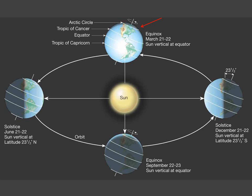Three months later, as the Earth continues its counter-clockwise orbit around the sun, on the Northern Hemisphere vernal or spring equinox, neither the North nor South Pole is tilted toward the sun, and the sun is directly overhead at the equator. So the sun shines equally on Northern and Southern Hemispheres, and the number of daylight hours roughly equals hours of darkness.